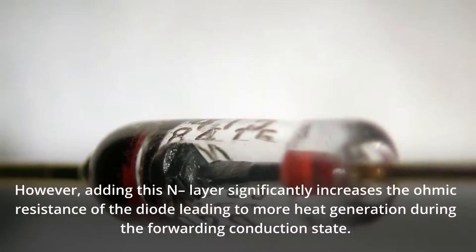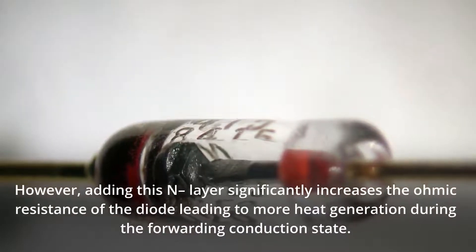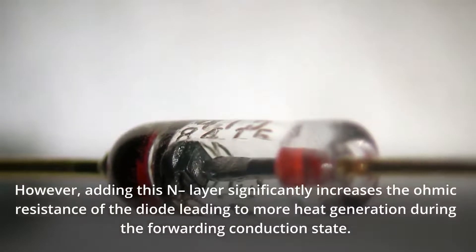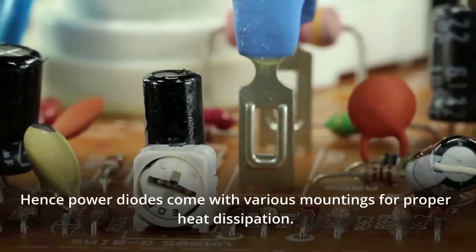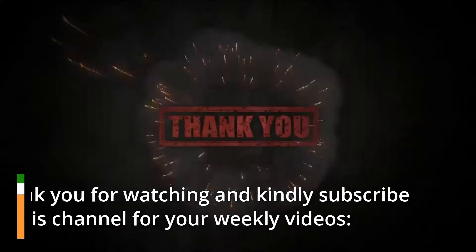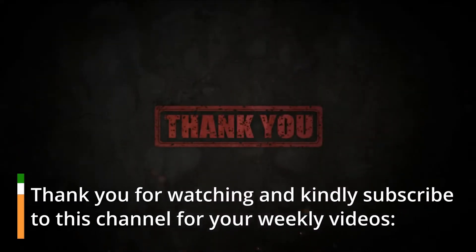However, adding this N- layer significantly increases the ohmic resistance of the diode leading to more heat generation during the forward conduction state. Hence power diodes come with various mountings for proper heat dissipation. Thank you for watching and kindly subscribe to this channel for your weekly videos.